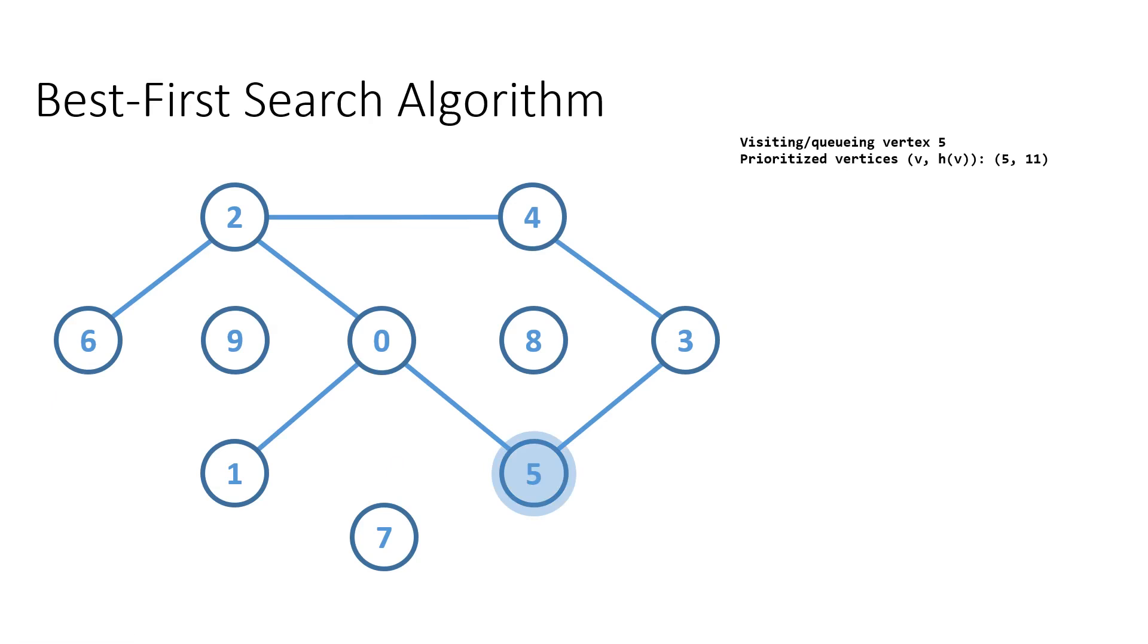Each visited vertex, here in light blue color, is queued with the designated heuristic function value written as the right element in a tuple. Here it is the priority 11. We've manually assigned these heuristic values when we generated all the vertices at the beginning of our algorithm implementation.